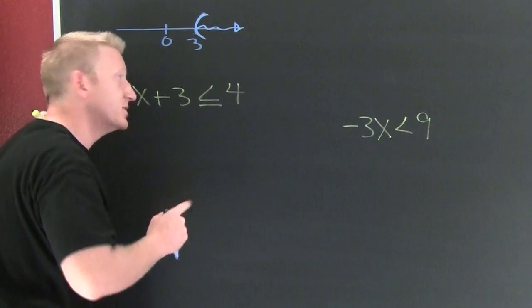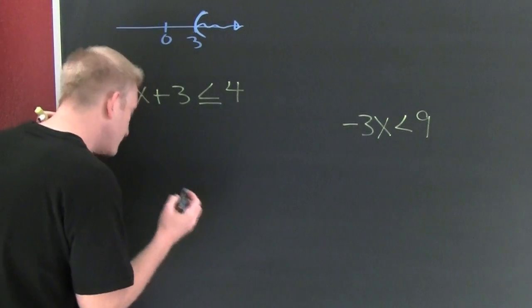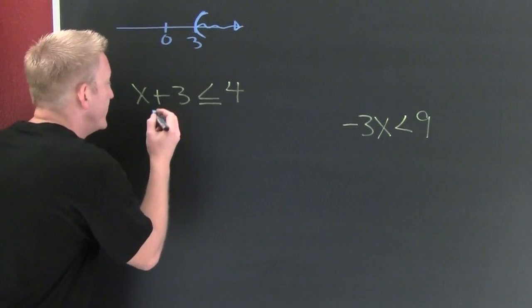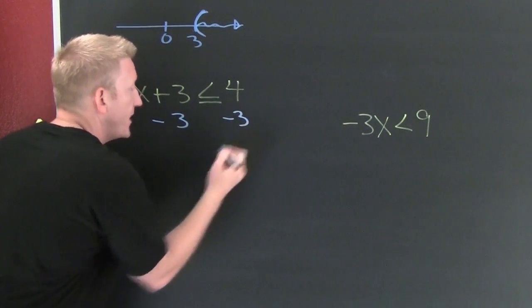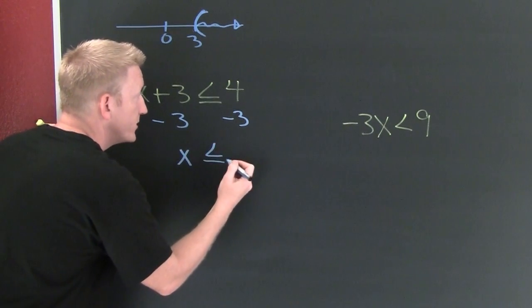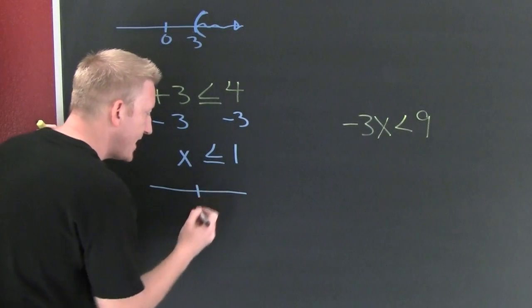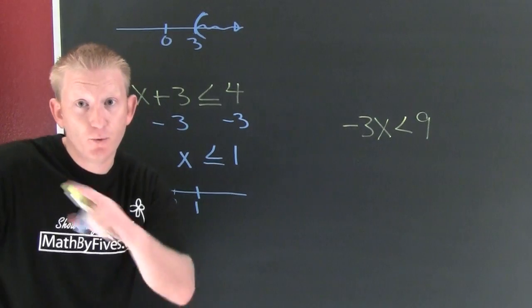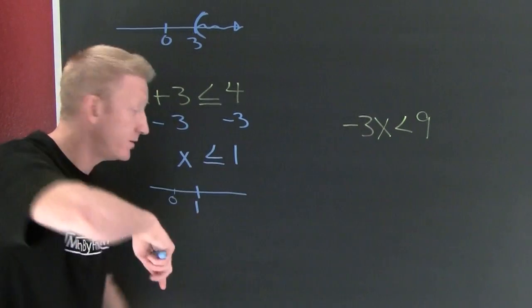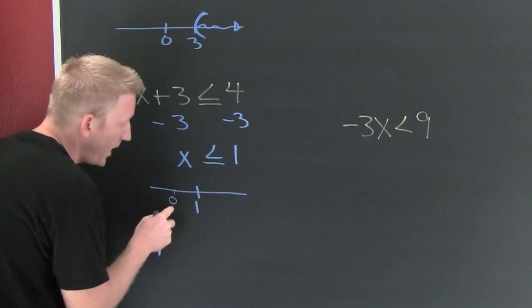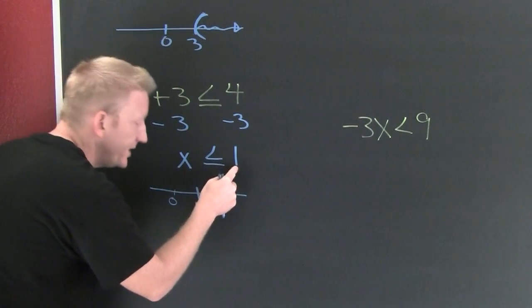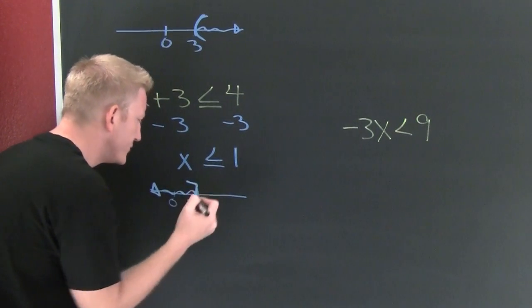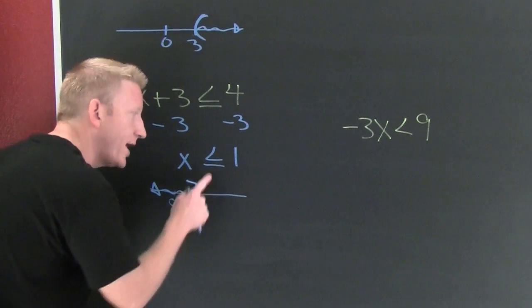Next one — these inequalities solve just like equalities, except for one case, and this is not it. Subtract three from both sides, and then x is smaller than or equal to one. Zero is over here — is zero smaller than one? Yes, so I shade towards zero.